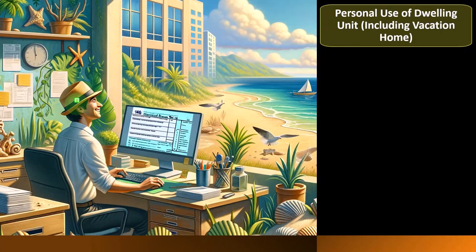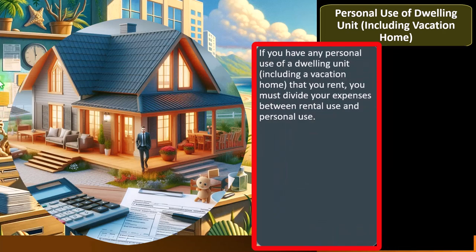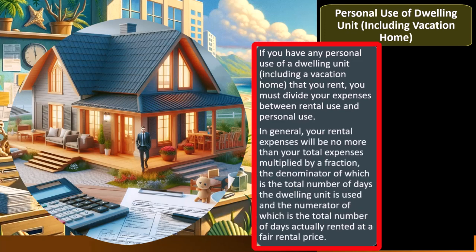Personal use of a dwelling unit, including a vacation home: if you have any personal use of a dwelling unit including a vacation home that you rent, you must divide your expenses between rental use and personal use. So if it's a rental property you use part of the year and rent the rest, you can see where the IRS has a problem — they don't like you writing off expenses for what is essentially a personal vacation home, potentially generating losses to take against other income.